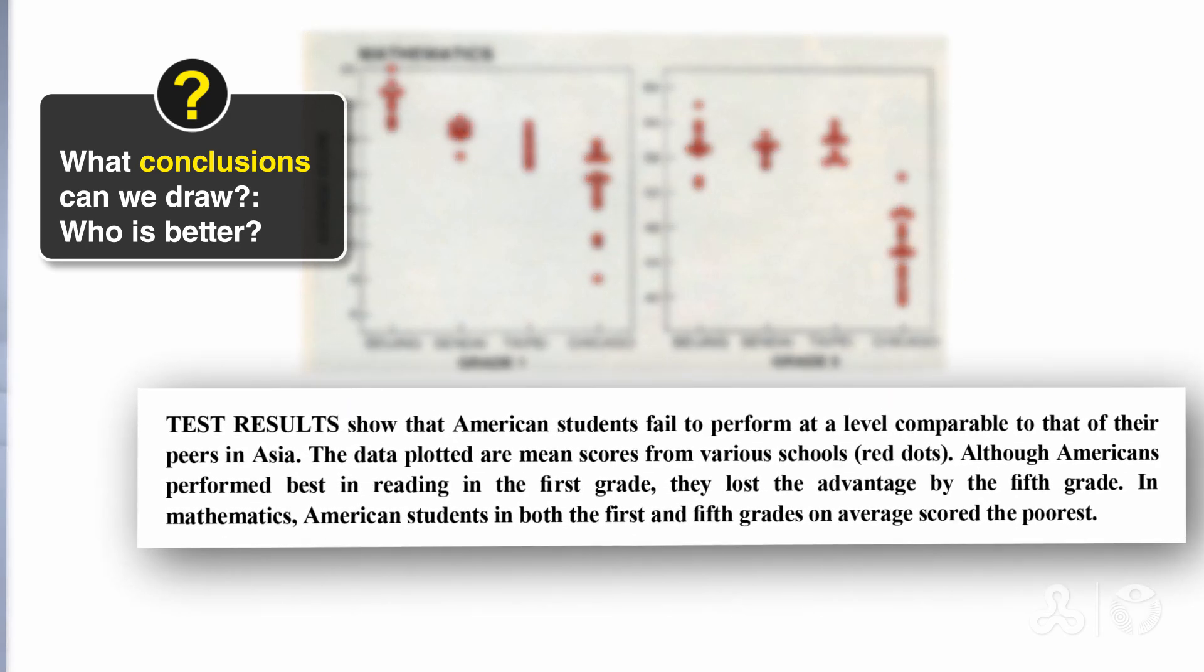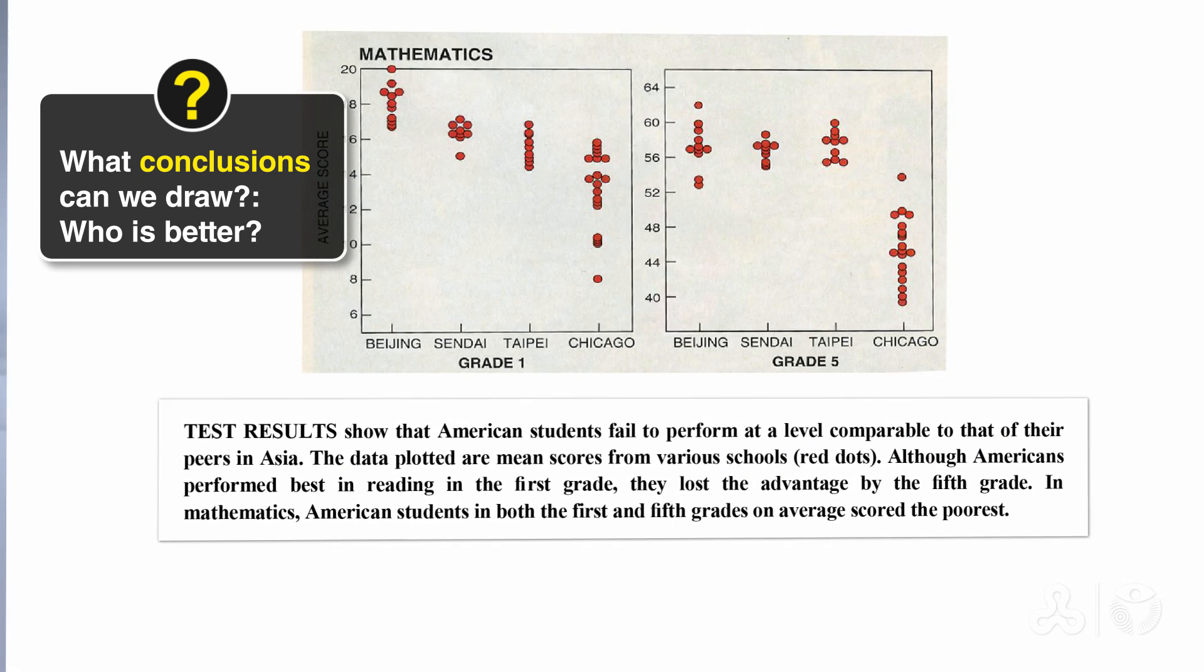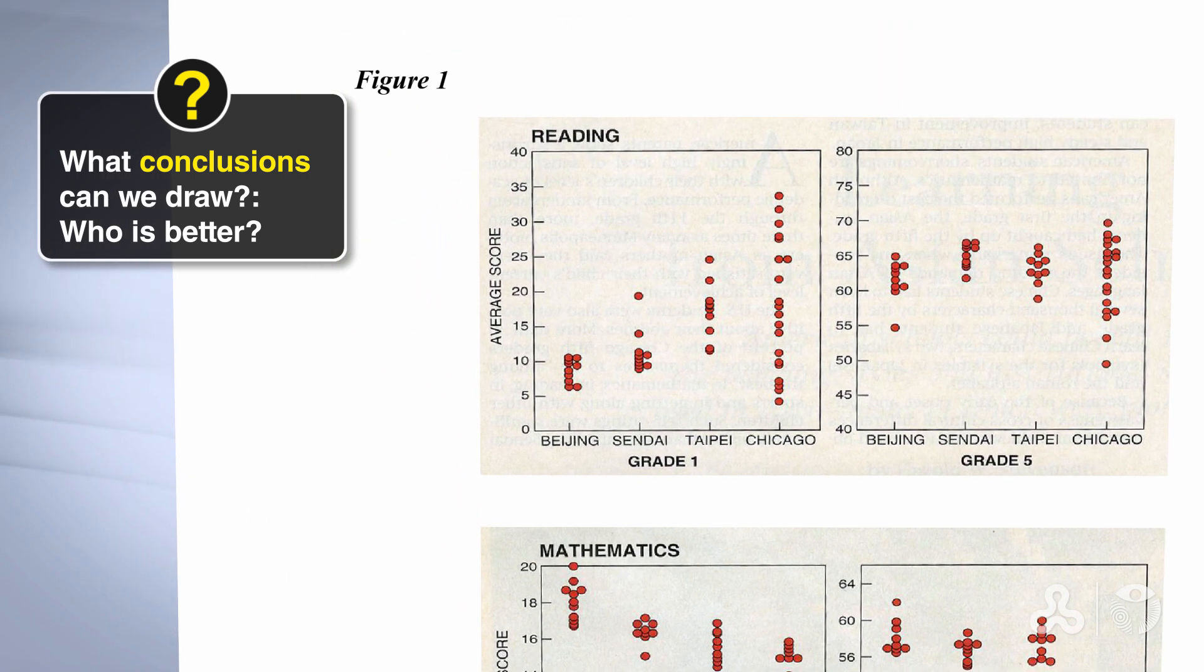The explanations under the picture tells us what each red dot is. Let's zoom in on the second sentence under the picture. The data plotted are mean scores from various schools. Red dots. So now we know that each red dot is a school.